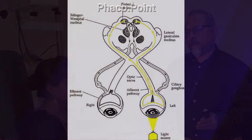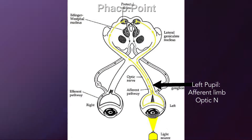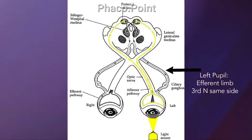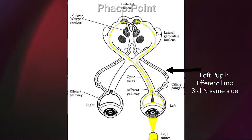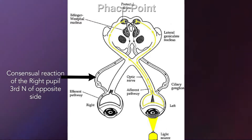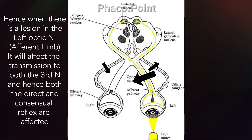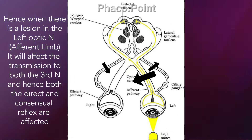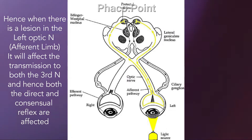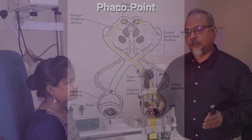Let us pause and analyze this result. When light is shown on the left eye, the afferent limb is the optic nerve of the left eye; the efferent limb is the third nerve of the left eye; and the opposite third nerve carries the consensual light reflex. So light falling on the left pupil causes constriction of both the left and right pupils. If there is a lesion in the optic nerve or afferent limb, both third nerves will not receive afferent impulses, and therefore both pupils will not react — the left direct reflex is sluggish and the right consensual is also sluggish.